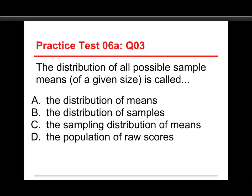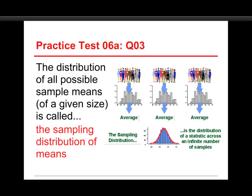Number three: the distribution of all possible sample means of a given size is called: A, the distribution of means; B, the distribution of samples; C, the sampling distribution of means; or D, the population of raw scores. Well, I was just talking about it at C, the sampling distribution of means. The distribution of means - that leaves out the sampling process through which it's created, so that doesn't count. Distribution of samples - you have to say what it is that you're distributing from the samples. And the population of raw scores, well, that's the original population that you're starting with that you get your samples from. We end up with a sampling distribution of means. And again, here's the process. You take lots of samples, you get their means, their averages, and then that becomes your data for creating a new distribution. That's the sampling distribution of means.